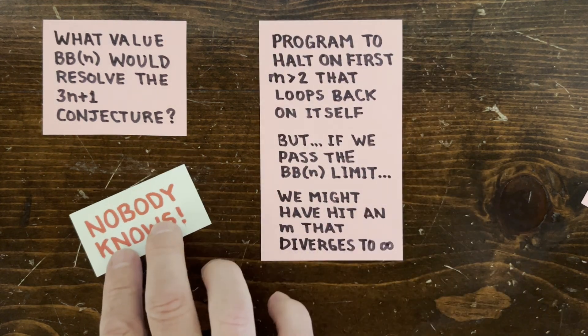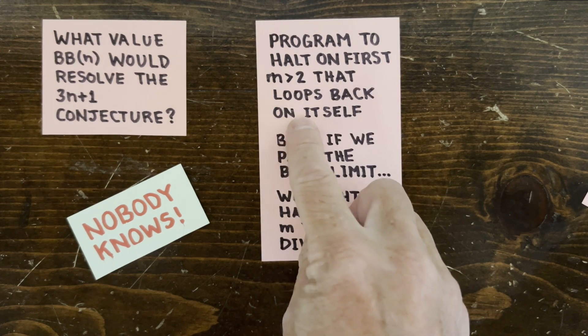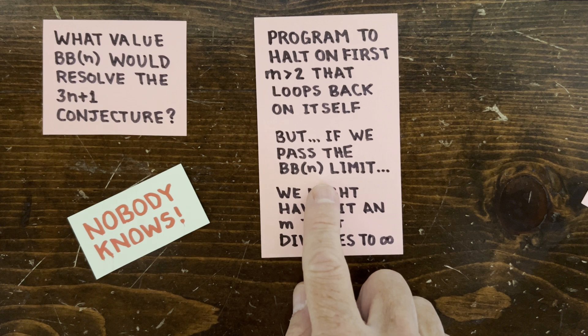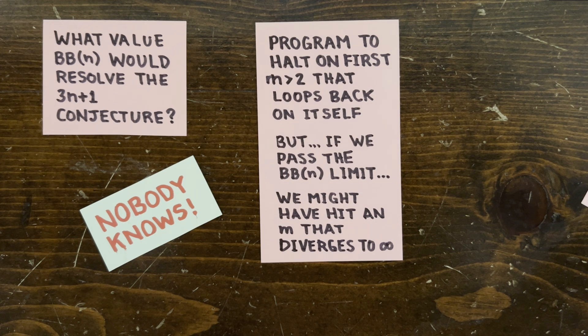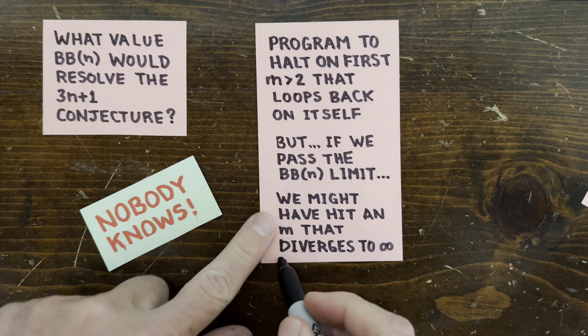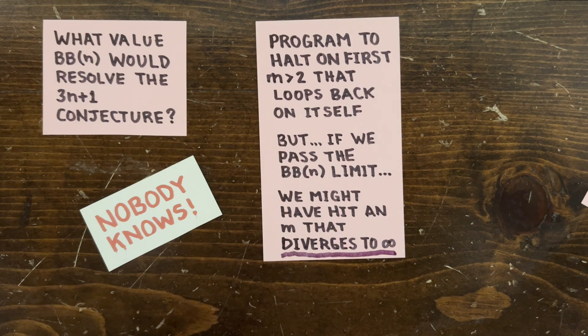We can write a program that looks for a 3n plus 1 counter-example, some number m that loops back on itself. But if we pass the BB(n) number of steps, the program might run forever not because the conjecture is true, but because of the other kind of 3n plus 1 counter-example, some number that diverges to infinity.